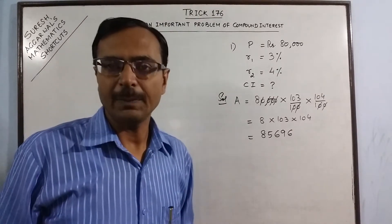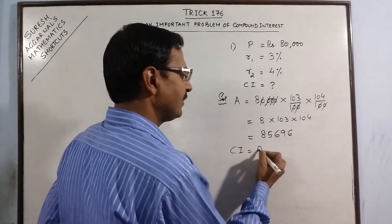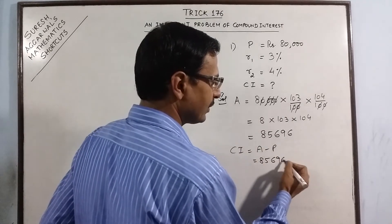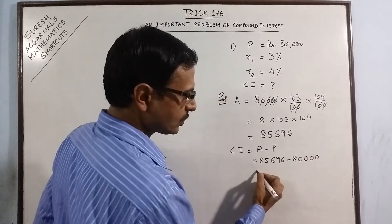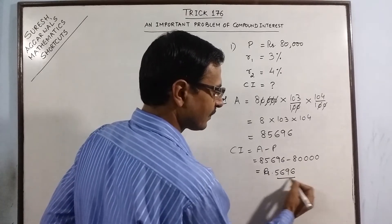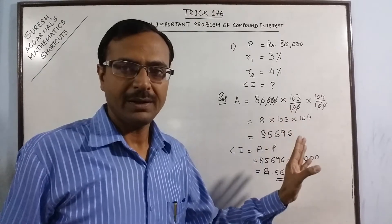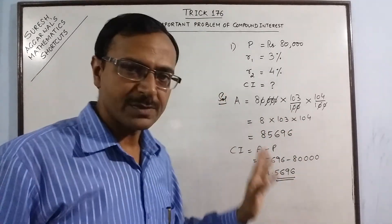Now this is the amount received. So obviously the compound interest will be amount minus principal. So we just need to subtract the principal amount that is 80,000 from the amount. So your answer will be rupees 5,696. You see single step and you obtain the compound interest for the 2 years period.